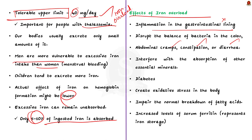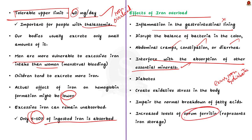Moreover, excessive iron in the gastrointestinal tract can interfere with the absorption of other essential minerals. One of the major concerns is the link between excess iron and diabetes. Iron can create oxidative stress in the body, which can damage cells, proteins, and DNA over time. This chronic oxidative stress can also impair the normal breakdown of fatty acids, leading to elevated triglyceride levels and their accumulation in muscle and liver tissues. Some researchers analyzed data from Indian adolescent children and found increased levels of a marker called serum ferritin, which represents iron storage in the body. This is associated with a proportional increase in the risk of certain health conditions, including elevated blood sugar levels, increase in total cholesterol, and hypertension.